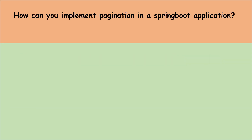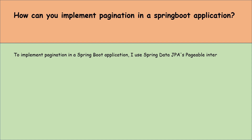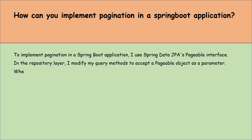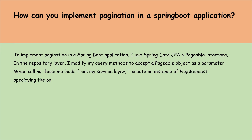How can you implement pagination in a Spring Boot application? To implement pagination, I use Spring Data JPA's Pageable interface. In the repository layer, I modify my query methods to accept a Pageable object as a parameter. When calling these methods from my service layer, I create an instance of PageRequest specifying the page number and page size I want.